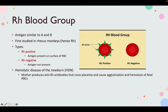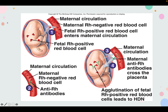For hemolytic disease of the newborn, think of it as the mother being RH negative and the baby being RH positive, which is genetic — the dad must be RH positive if mom is RH negative, though we won't get into the full genetics of it.